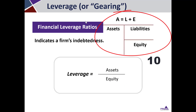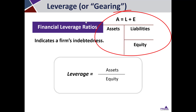mean that you have 10 dollars of assets for every one dollar of equity, which means — using the structure of the balance sheet — that you've got nine dollars in liabilities. And if you had a leverage ratio of four, it